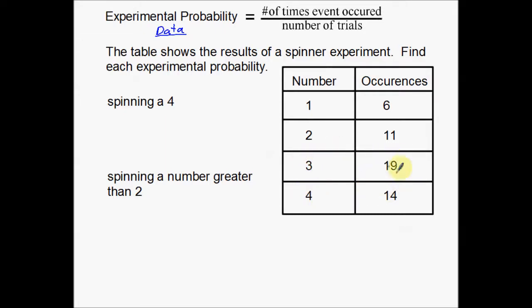So it looks like 3 kind of wins out right here. We get more 3's than anything else. It looks like 1 kind of lost out. We don't get very many ones in this experiment.